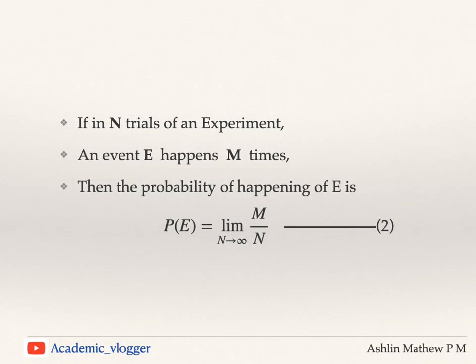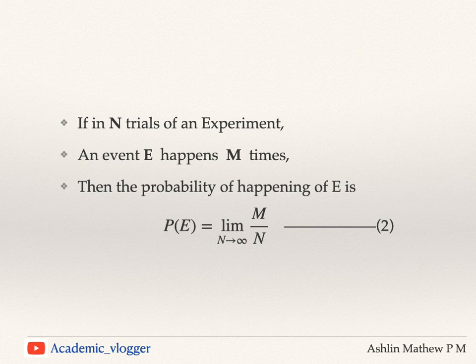To state it formally: if in N trials of an experiment an event E happens M times, then the probability of happening of event E is the limit as n tends to infinity of M by n. So there is a limiting case involved in this definition.